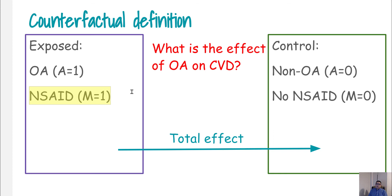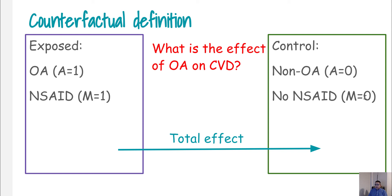The mediator variable can also take the value of one or zero. So if our exposure was one and our mediator was one, and our exposure was zero and our mediator was zero, then by comparing these two groups' outcomes we can definitely get the total effect.